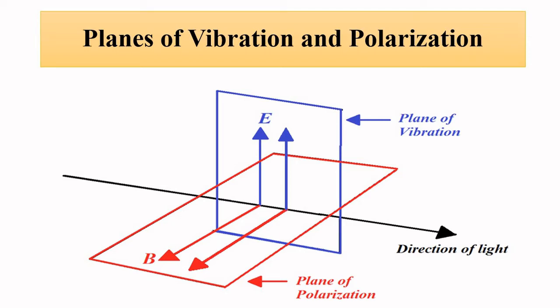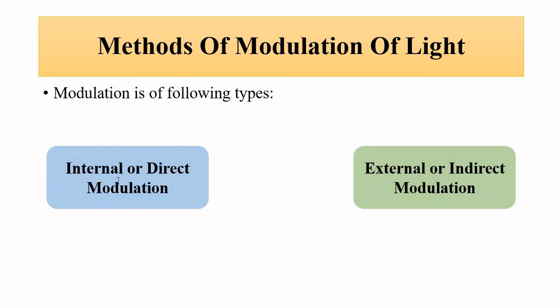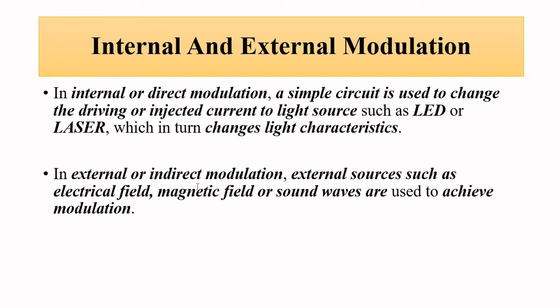Modulation of light involves two approaches: direct modulation (also called internal modulation) and external or indirect modulation. Internal or direct modulation generally takes into account the photoelectric effect, and will be discussed when we cover the two main optoelectronic sources: light emitting diodes and lasers.